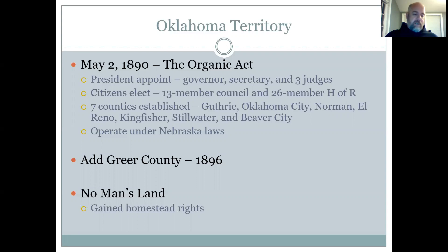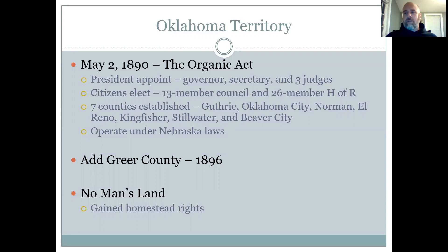The U.S. government in 1890 on May 2nd passed the Organic Act for the Territory of Oklahoma, which included all the land west of the five tribes, including No Man's Land. I would actually suggest you look at your map on page 305 — if you don't have your book, you can get that right now. It shows a pretty good picture of what Oklahoma Territory looked like at this point in time.